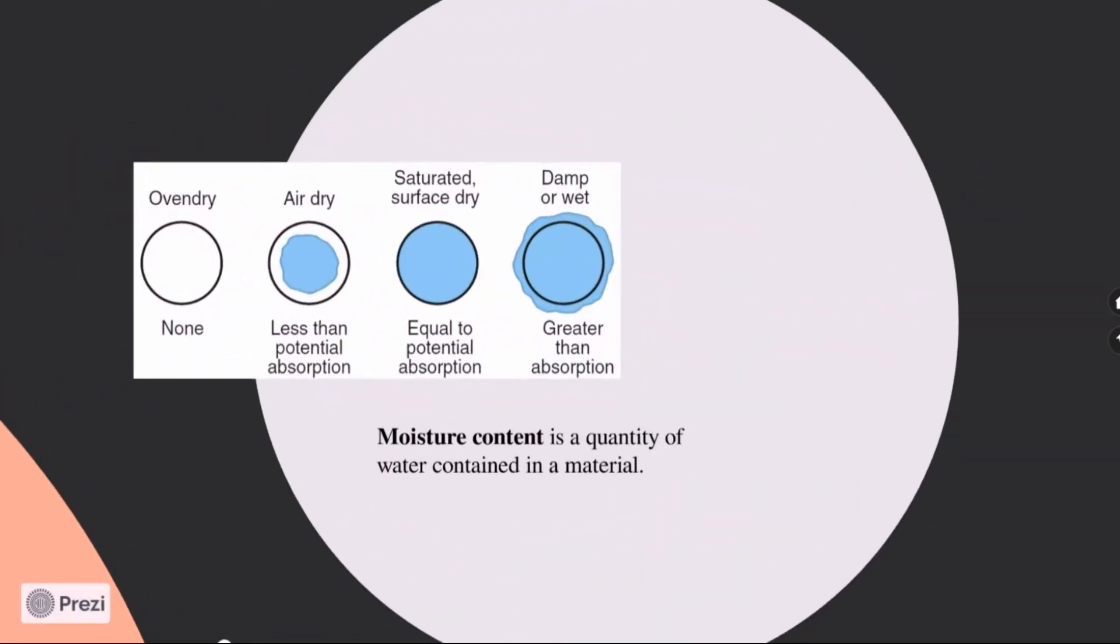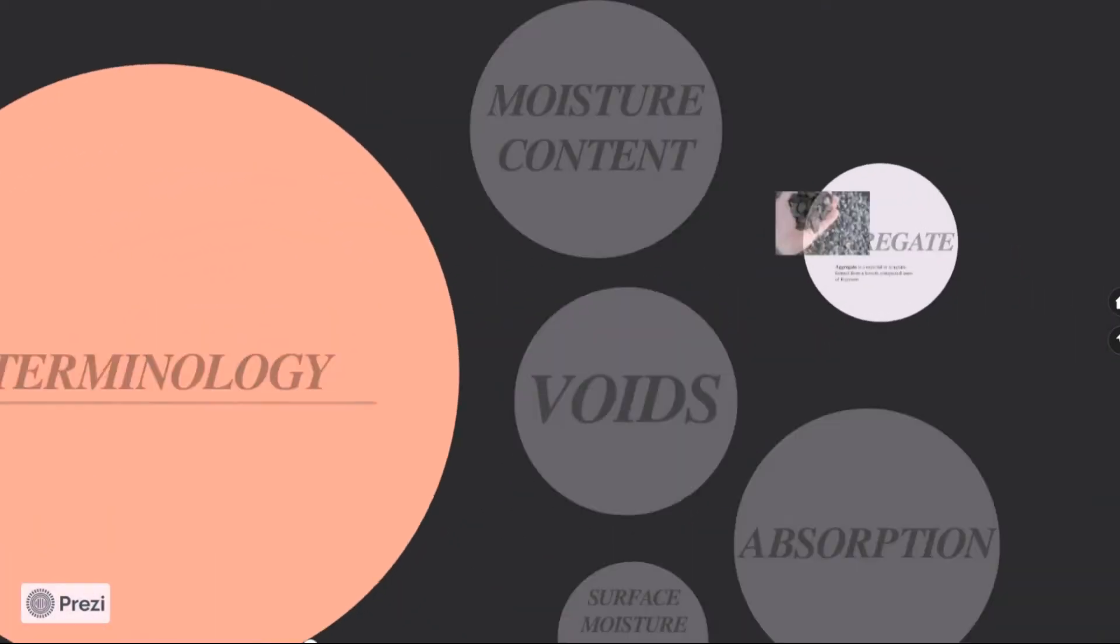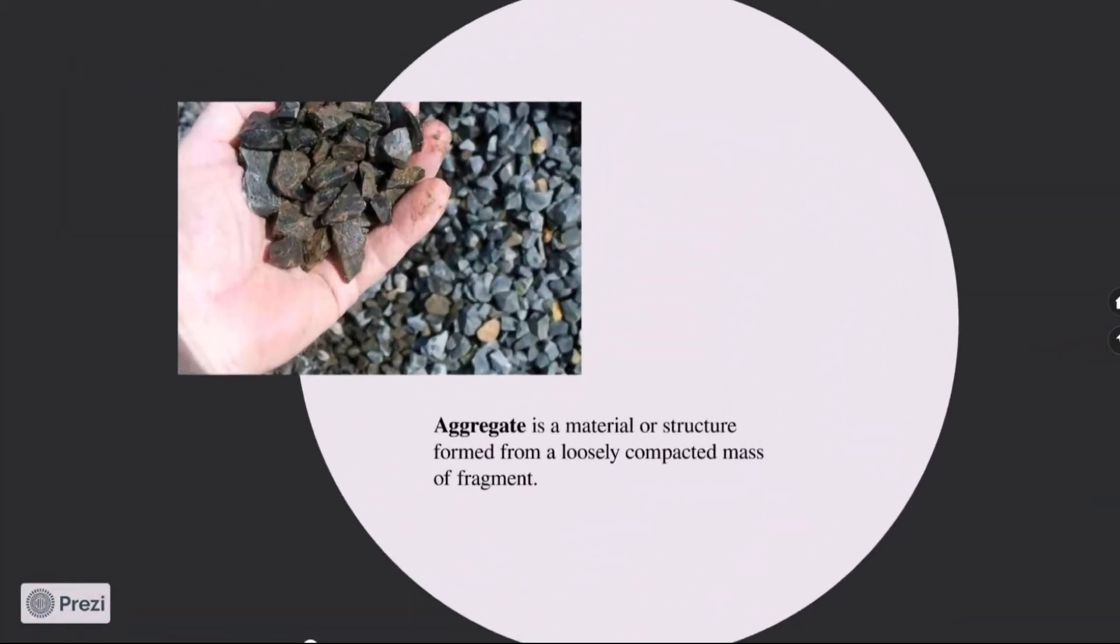Moisture content is a quantity of water contained in a material. In biology, the term moisture is associated with the presence of liquid, particularly water. Aggregate is a material or structure formed from a loosely compacted mass of fragments. It is used in building and construction that is mixed with cement, bitumen, lime, gypsum, or another adhesive to form concrete or mortar.